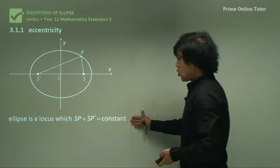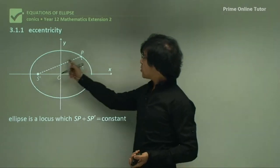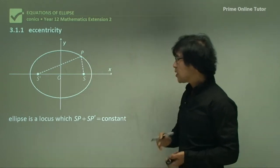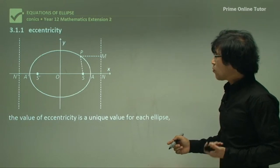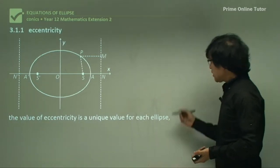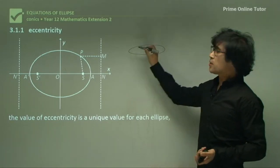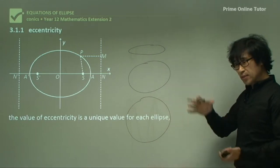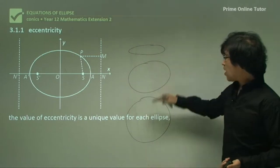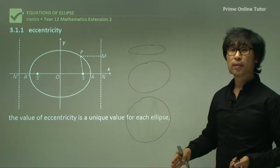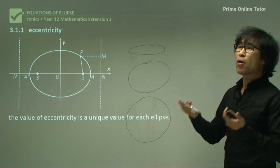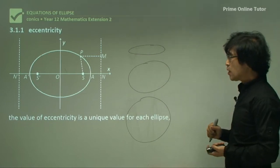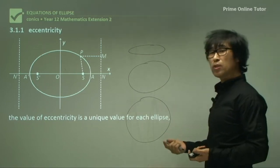An ellipse is a locus where the sum of distances from any point on the ellipse to each focus remains constant at all times. Now we are going to look at eccentricity. Different ellipses have slightly different characteristics, and the word eccentricity is a kind of parameter to recognize which one is which. We'll cover what eccentricity is and how to calculate it from the formula.